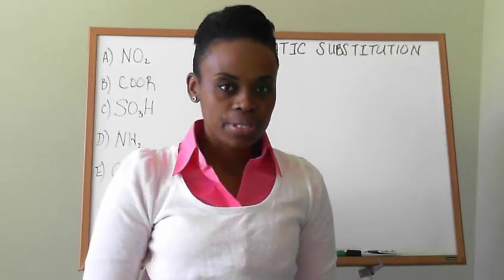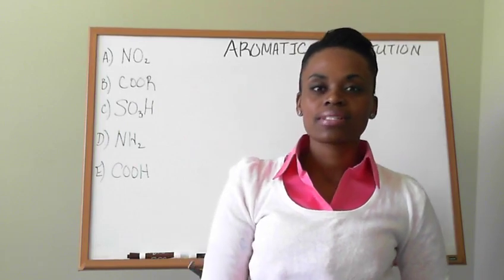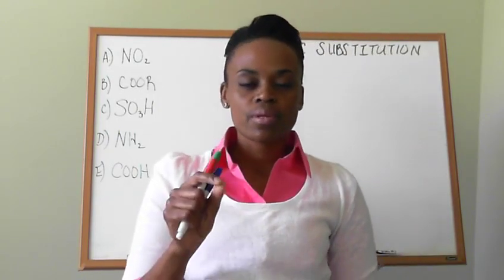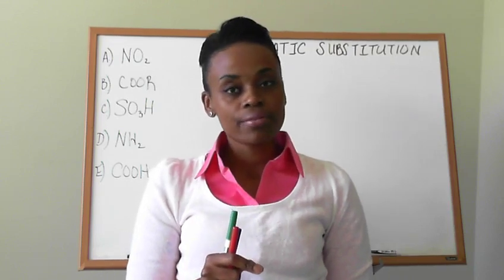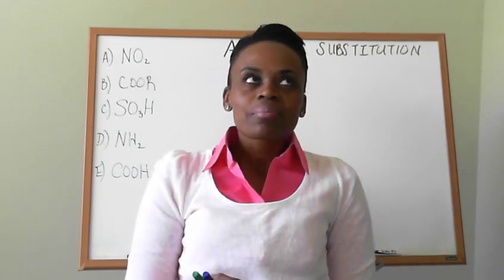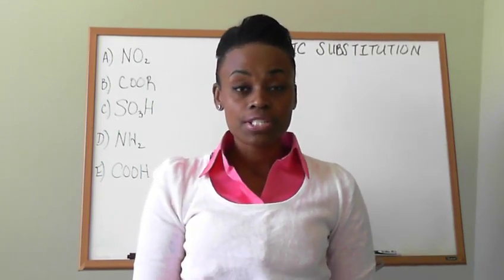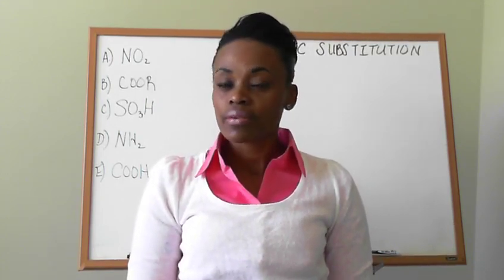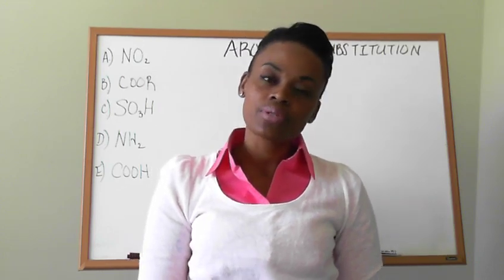In electrophilic aromatic substitution, we have aromatic compounds such as benzene, and essentially what we're doing is substituting those hydrogen atoms on the benzene ring with heavier, more complex chemical groups. We can nitrate the ring, sulfonate the ring, add halogens to the ring, acylate, alkylate - we can do a lot of things.